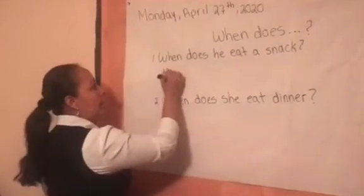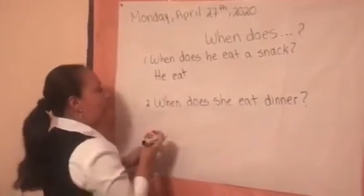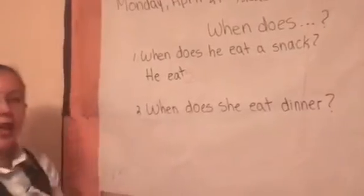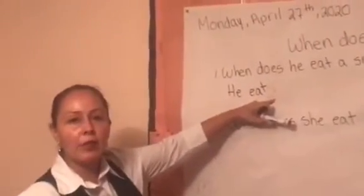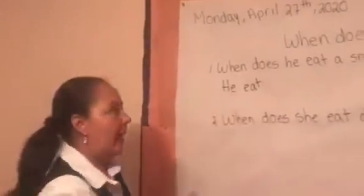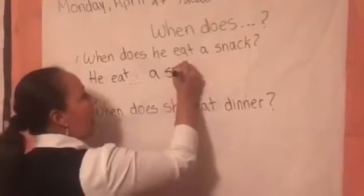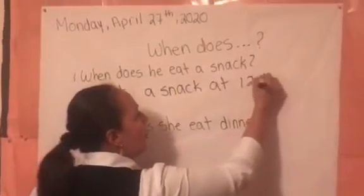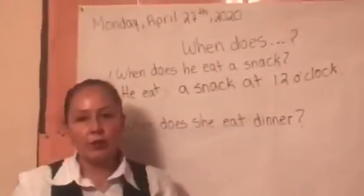He, she, it — always add an S. Recuerden que a 'he,' 'she,' 'it' le tenemos que agregar una S. He eats a snack at 12 o'clock. Él come un bocadillo a las 12.